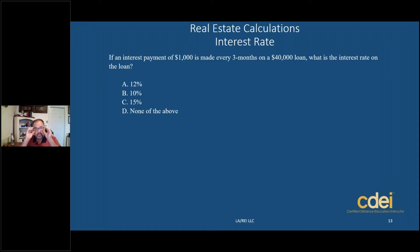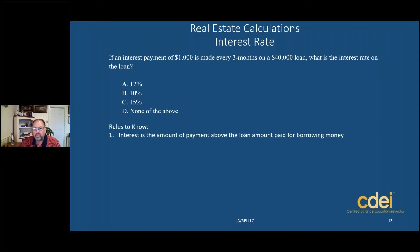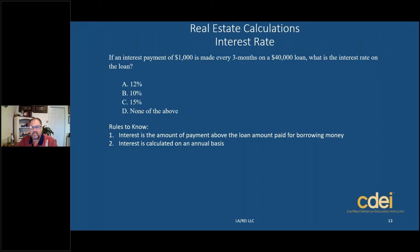When I look at a problem like this, I go to my scratch paper and write down a few things I know about interest rates. The first thing is: what is an interest rate? It's the amount of money you're going to pay above the principal loan amount that you're borrowing — it's the cost of borrowing money. So if you borrow $40,000, the interest you pay is the cost of borrowing that money. Very importantly, interest is calculated on an annual basis — it's annualized. You want to know that for the state exam.